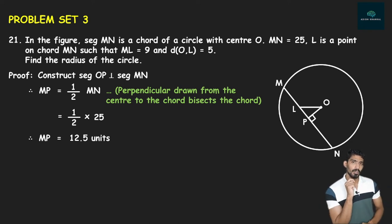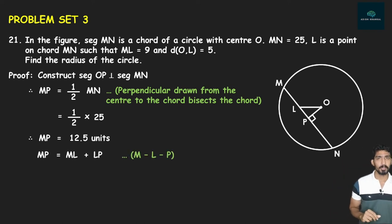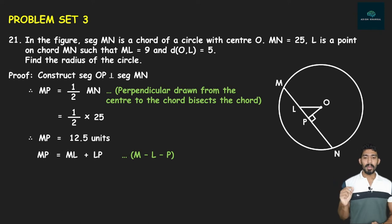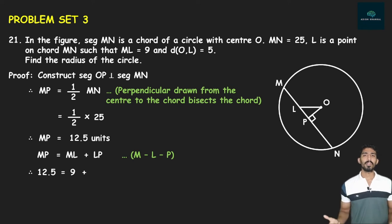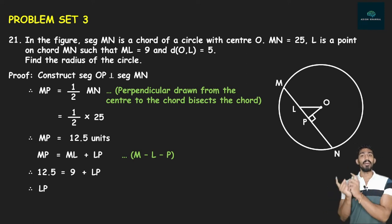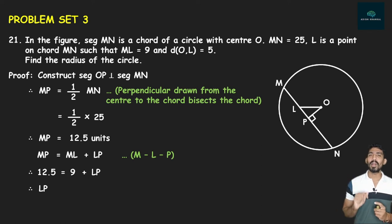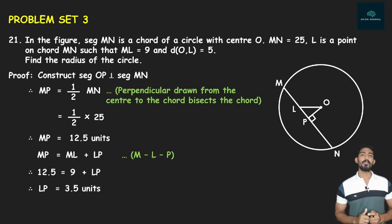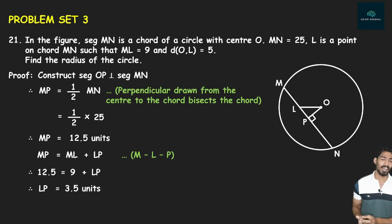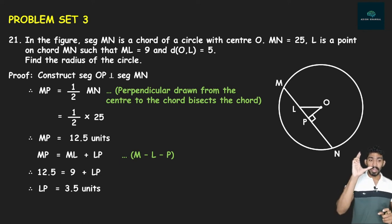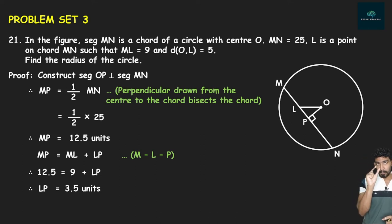अब MP का value मिलने के बाद — MP is actually made up of two segments: MP = ML + LP, by M-L-P betweenness/collinearity। MP का value 12.5 है, ML का value 9 है, LP unknown है। तो 12.5 = 9 + LP → LP = 12.5 − 9 = 3.5 units।